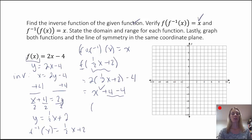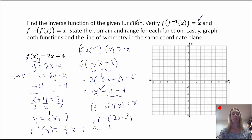We should also show that f-inverse of f of x equals x. So this would be f-inverse of 2x minus 4. In the inverse function, anywhere I see an x I'm going to replace it with 2x minus 4. That gives me one-half times (2x minus 4) plus 2. Distributing: half of 2 is 1, times x is x; distributing the half to the minus 4 gives minus 2, plus 2 — the 2s cancel, we're left with x. So that worked.